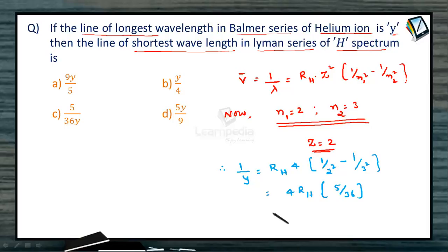In other words, 1 by Y is equal to 4RH into 5 by 36 is 5RH by 9 is equal to 1 by Y. From where we can write Rydberg's constant for hydrogen can be written as 9 by 5Y.